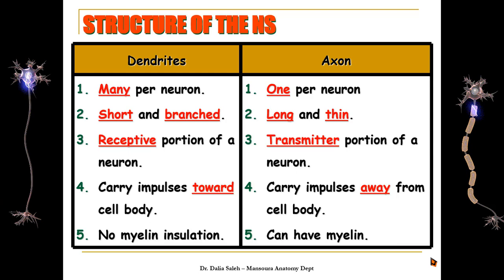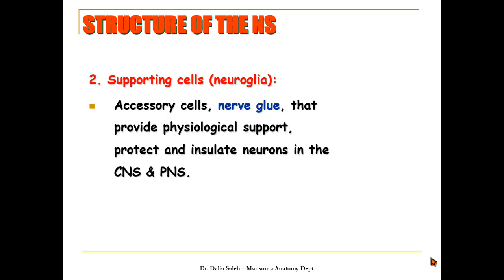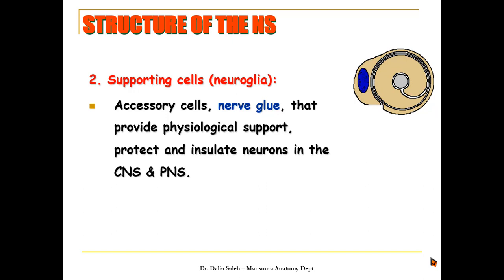The dendrites are not myelinated — there is no myelin sheath around them — while the axon can have a myelin sheath. The other element that forms the nervous system is the supporting cells, or neuroglial cells. These are accessory cells, also known as nerve glue, that provide physiological support, protect, and insulate neurons in both the central and peripheral nervous system. One of the neuroglial cells of the peripheral nervous system is called the Schwann cell, which wraps around the peripheral nerve in many rounds.